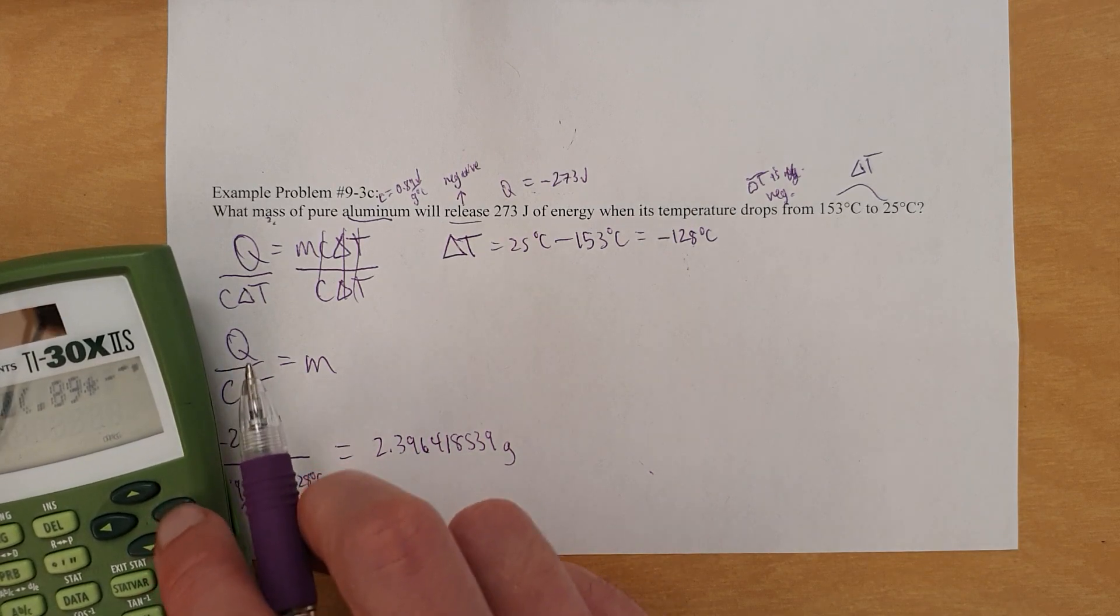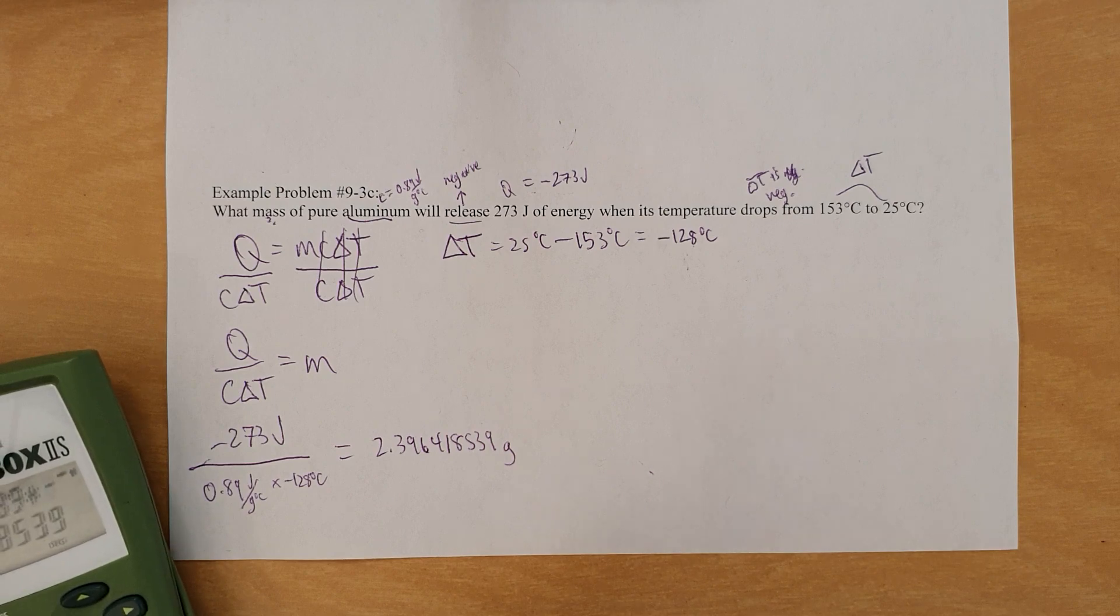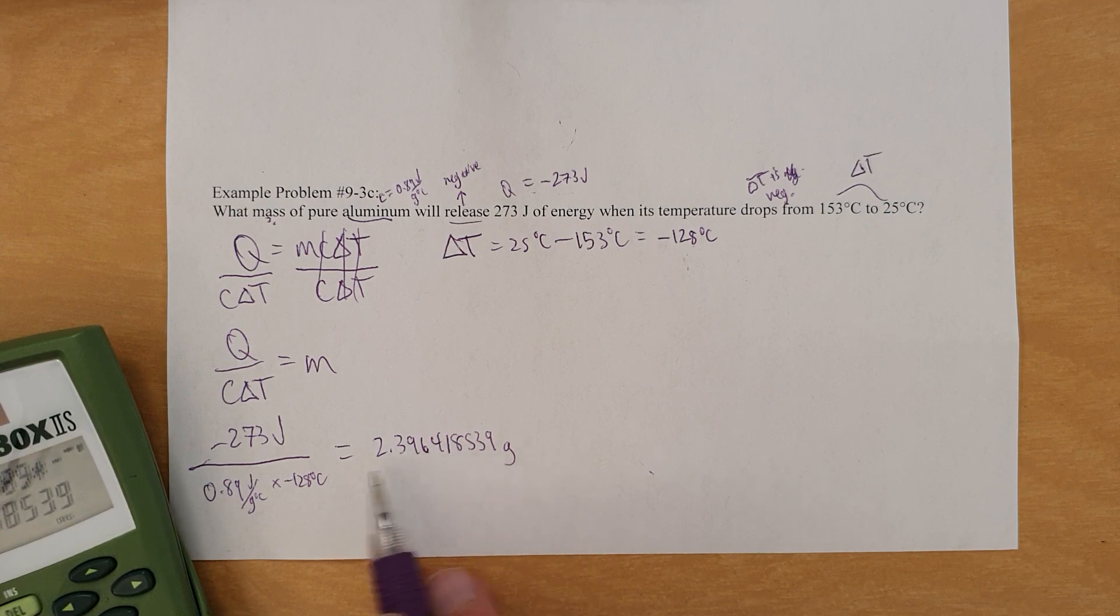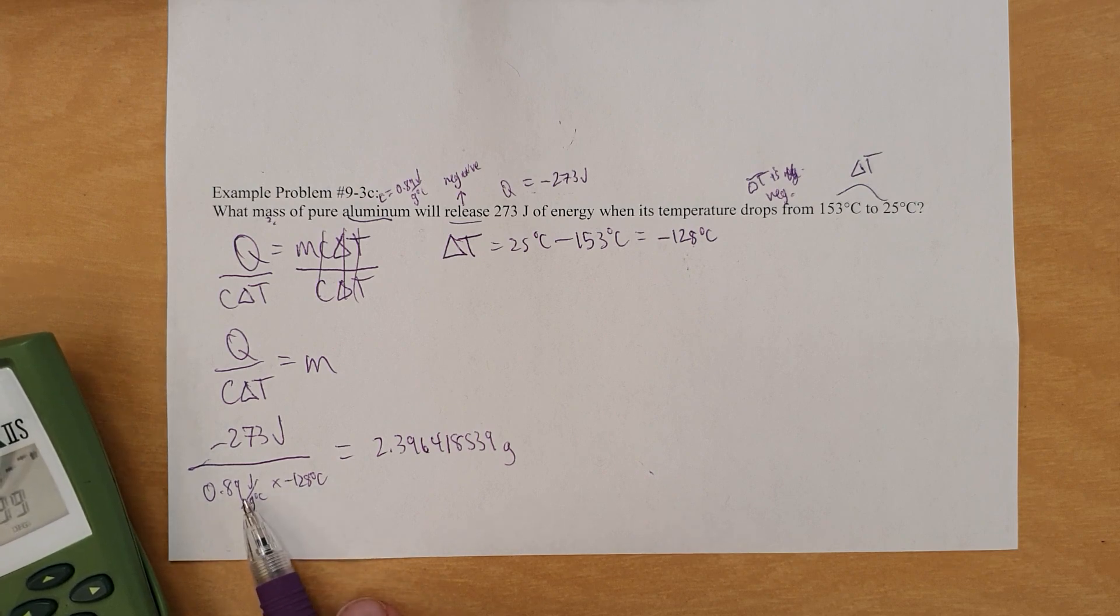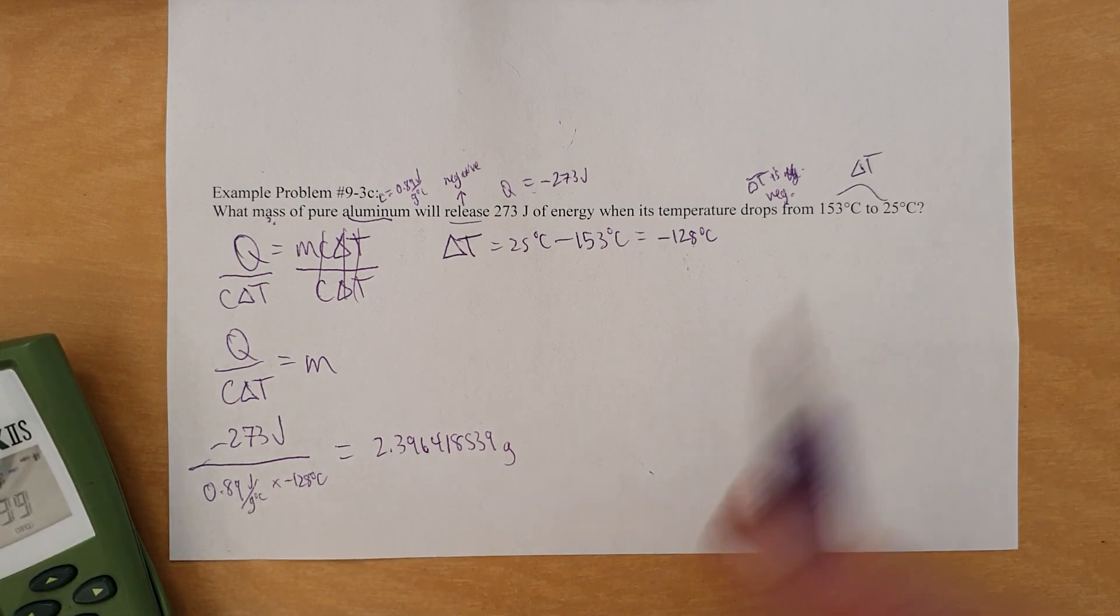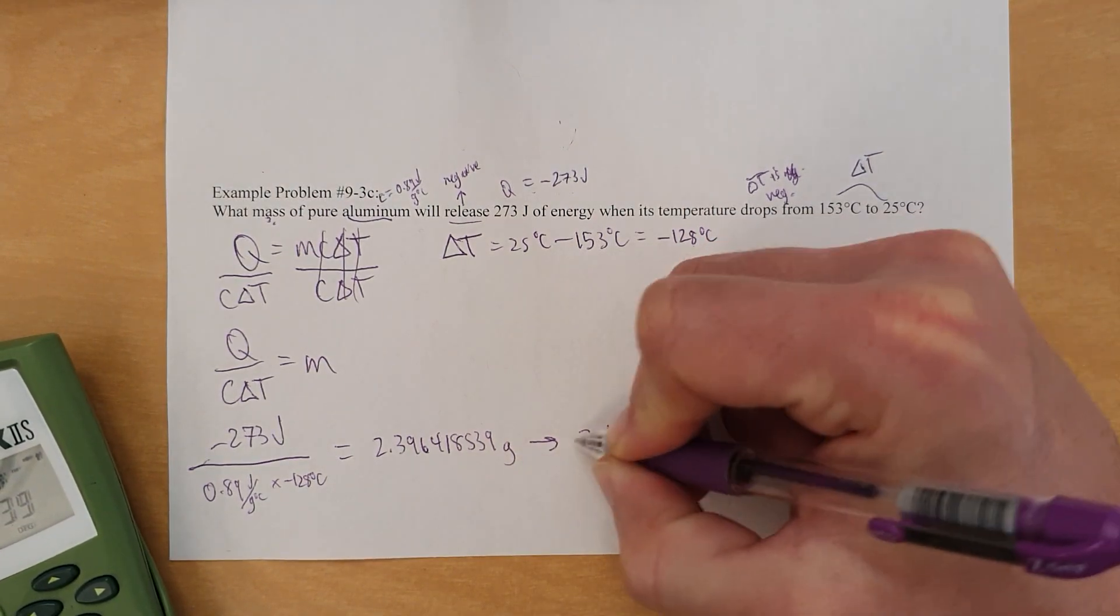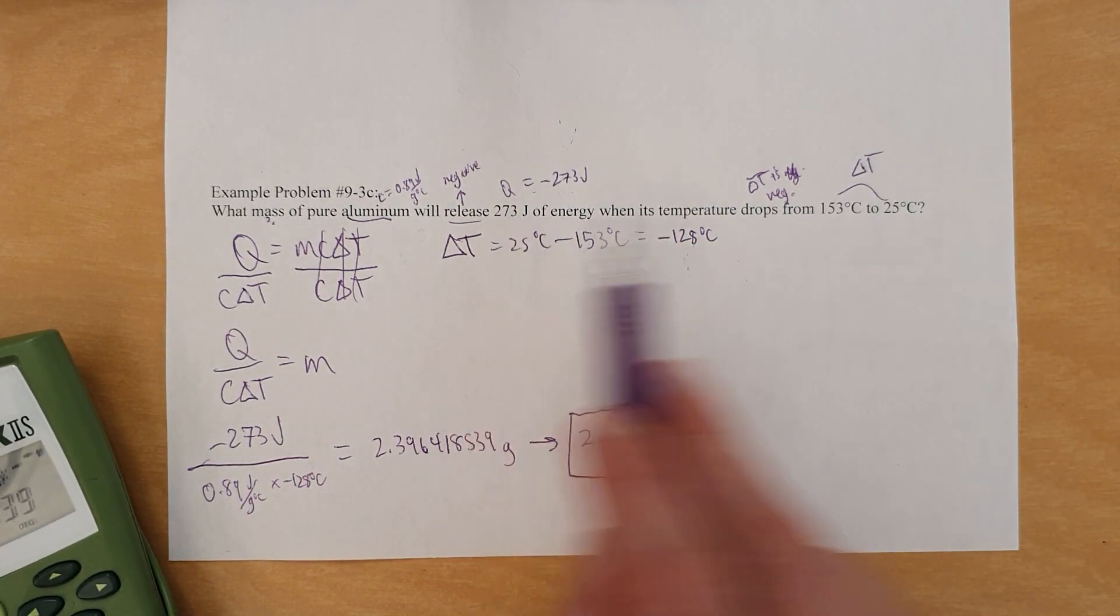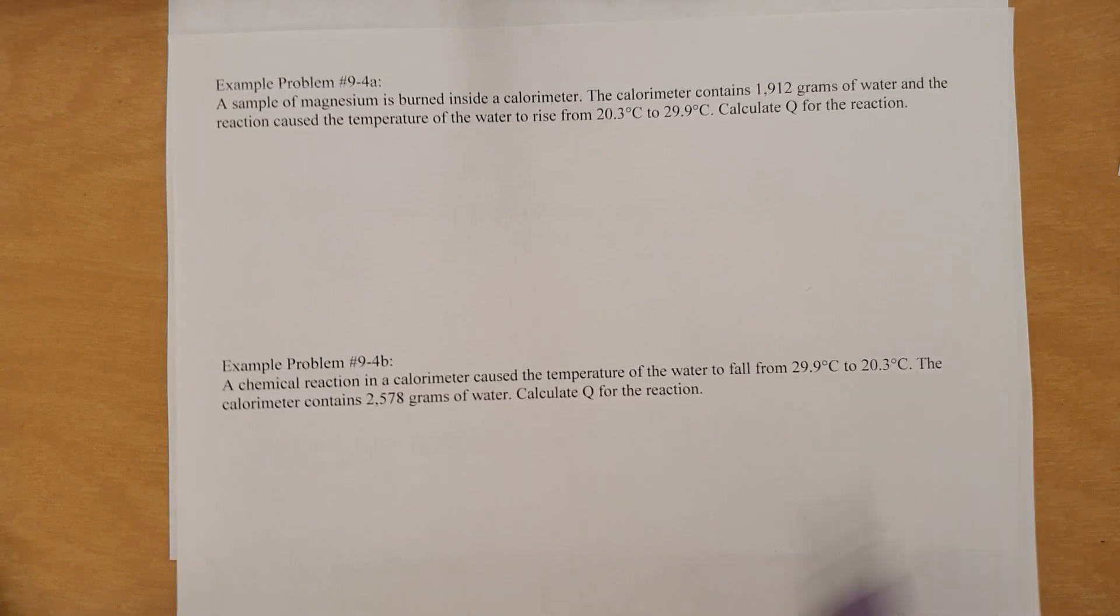All right. Now, anyway. 2.396418539 grams. All right. So that's what that one is. Now I'm just double checking to make sure I got all my math right. Okay. Yes, indeed. So the next thing to look at is, okay, this is the mass in grams, but we got to round for significant figures. Ignore sig figs for temperature, but do look at the other things. This is two sig figs. This is three. So we've got to round to two. And this will be 2.4 grams of aluminum. That's the mass of aluminum that will release that many joules when its temperature drops from this to this.